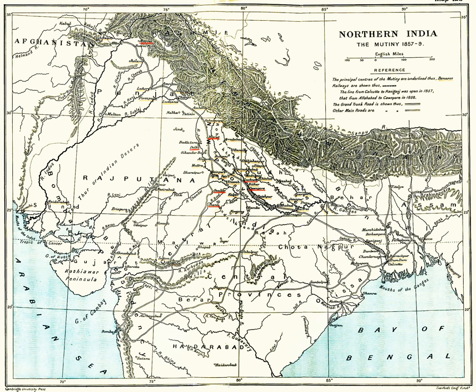Very soon after the events at Meerut, rebellion erupted in the state of Awadh, also known as Oudh, in modern-day Uttar Pradesh, which had been annexed barely a year before. The British commissioner resident at Lucknow, Sir Henry Lawrence, had enough time to fortify his position inside the residency compound. The company forces numbered some 1,700 men, including loyal sepoys. The rebels' assaults were unsuccessful, and so they began a barrage of artillery and musket fire into the compound. Lawrence was one of the first casualties.